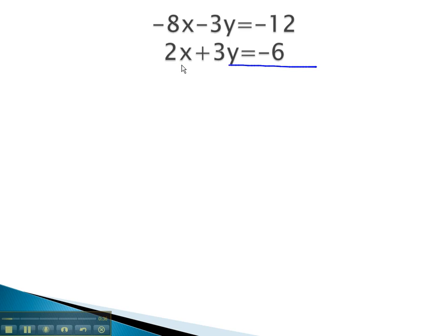For example, in this problem, we're going to add together the left side and add together the right side of this equation. As we do, notice negative 8x plus 2x is negative 6x. More interesting is notice that when we add the negative 3y plus 3y together, they subtract out completely.